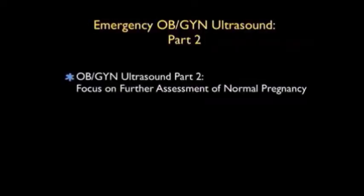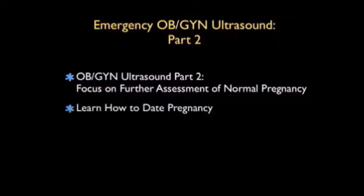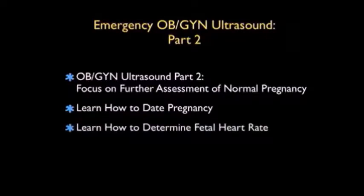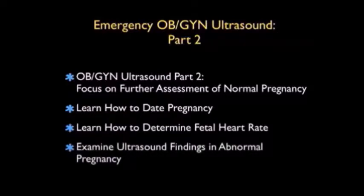In this module entitled Emergency OBGYN Ultrasound Part 2 of Intrauterine Pregnancy, we're going to focus on the further assessment of normal pregnancy. We'll look at two further things that are important to assess: learning how to date the gestational age of the pregnancy, as well as learning how to determine the fetal heart rate. Then we'll wrap up the module by examining further findings in abnormal pregnancies and learning how to differentiate these findings from a normal intrauterine pregnancy.